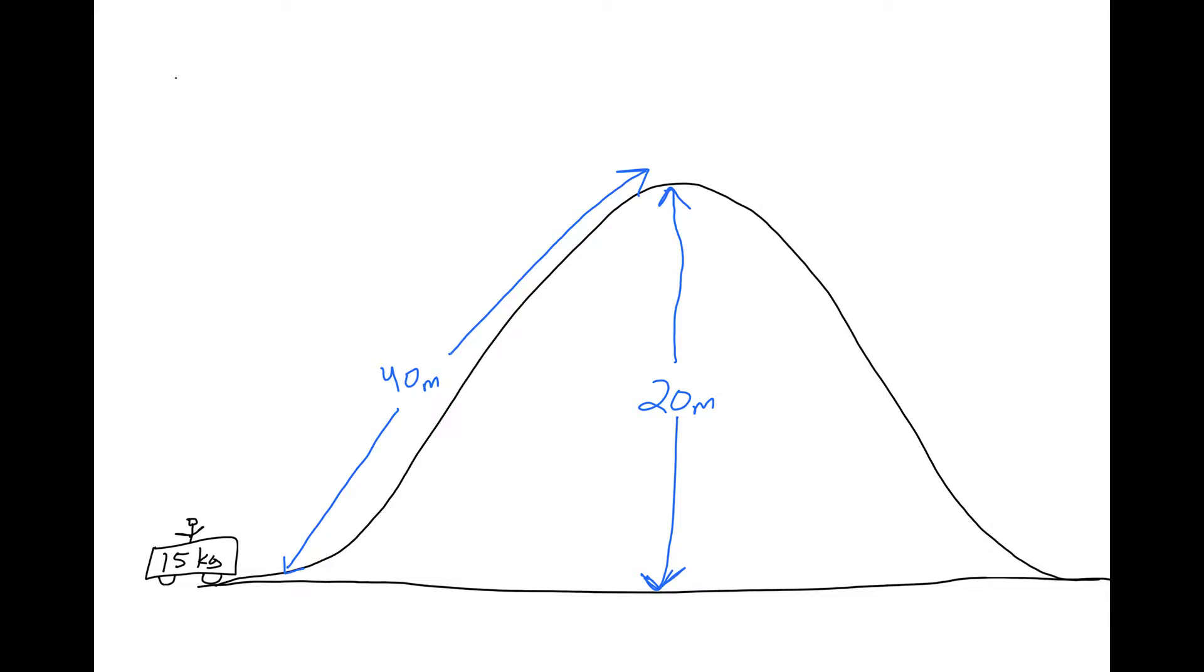All right, so we have a 15 kilogram cart. We're going to bring it up a hill over the top and we want to find a few different things. We want to find the potential at the top, PE. We want to find the work done in order to get it there and then how much force we needed to actually do that work up the hill, and then we're going to find the velocity it has at the end.